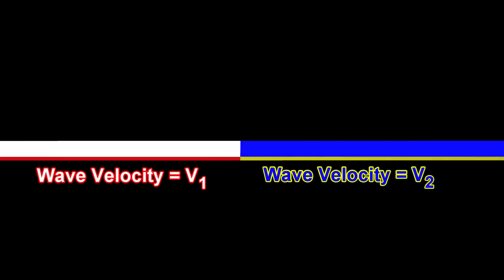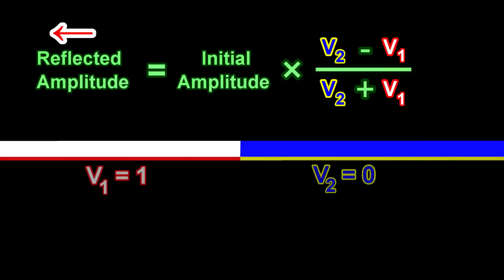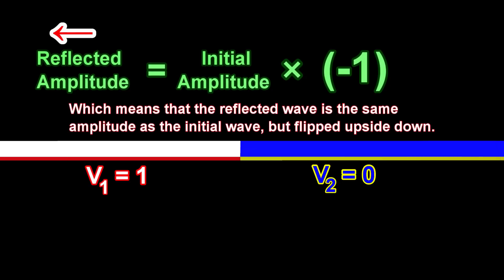Let us define the wave velocity inside the material on the left as V1, and the wave velocity inside the material on the right as V2. The amplitude for the reflected wave can be described through this equation. If V1 is equal to 1 and V2 is equal to 0, then we get a reflected amplitude equal to the initial amplitude multiplied by negative 1, which means that the reflected wave is the same amplitude as the initial wave, but flipped upside down.